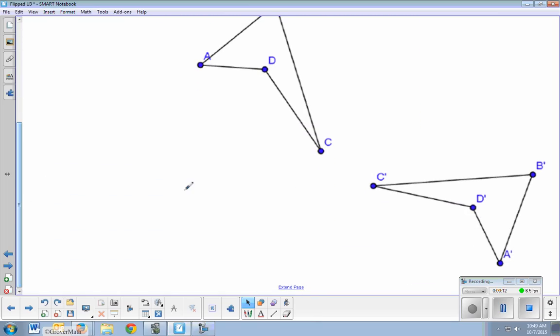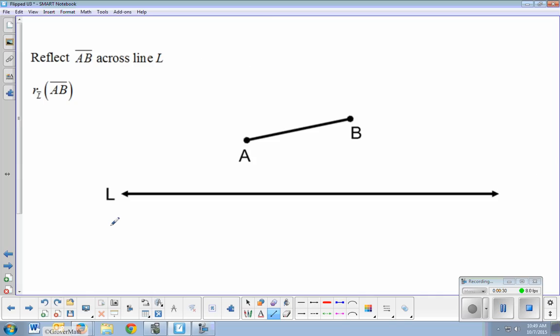First is if I'm given a reflection image here. So I have this image and then its prime image. This is the pre-image and the prime we call the reflected image. I want to find the line of reflection. You can probably estimate about where that is, but I want to use construction tools to precisely know exactly where that is. And then there's also the construction of actually reflecting something across the line.